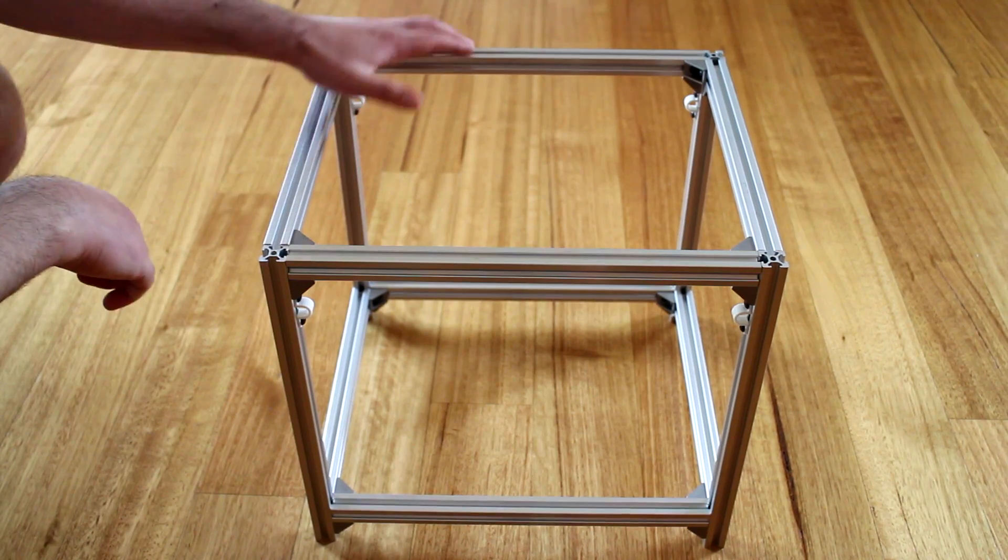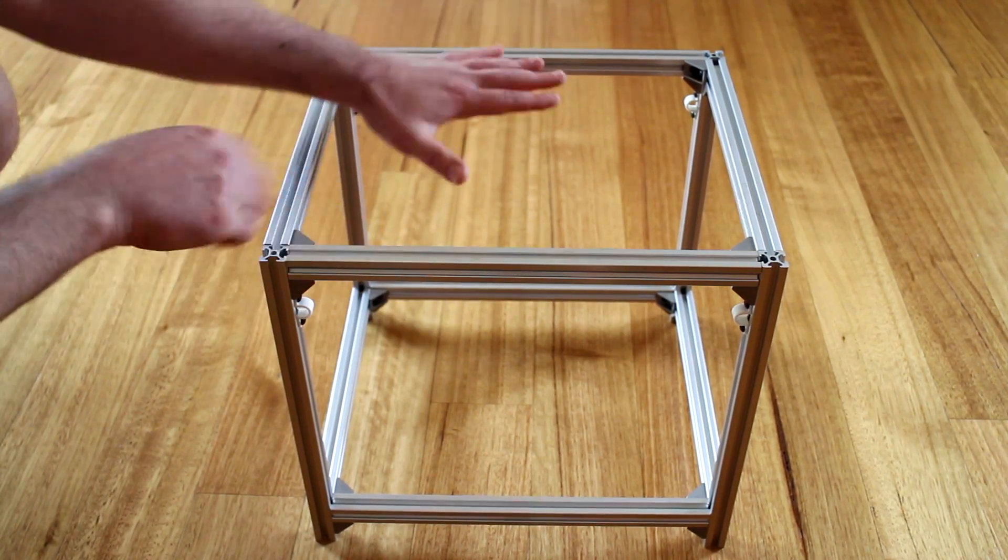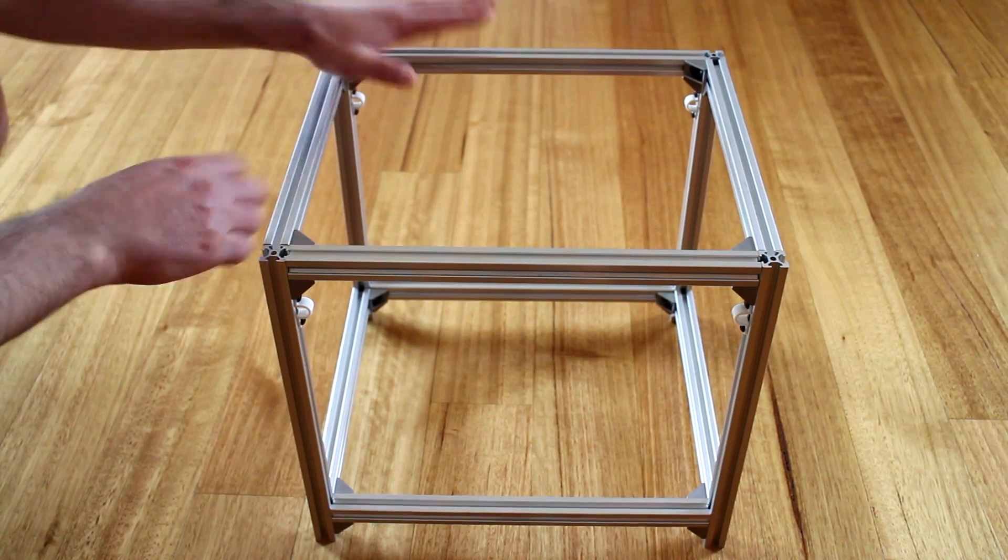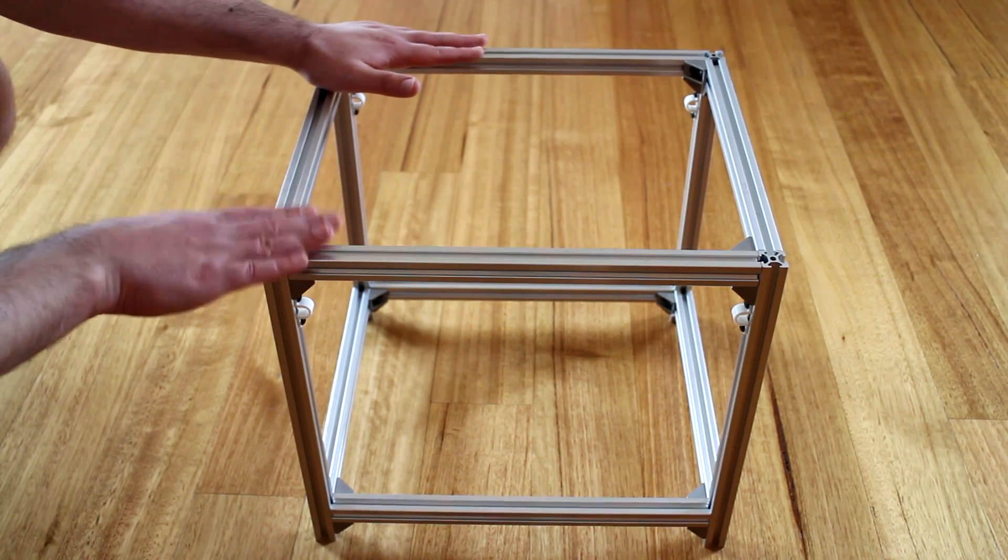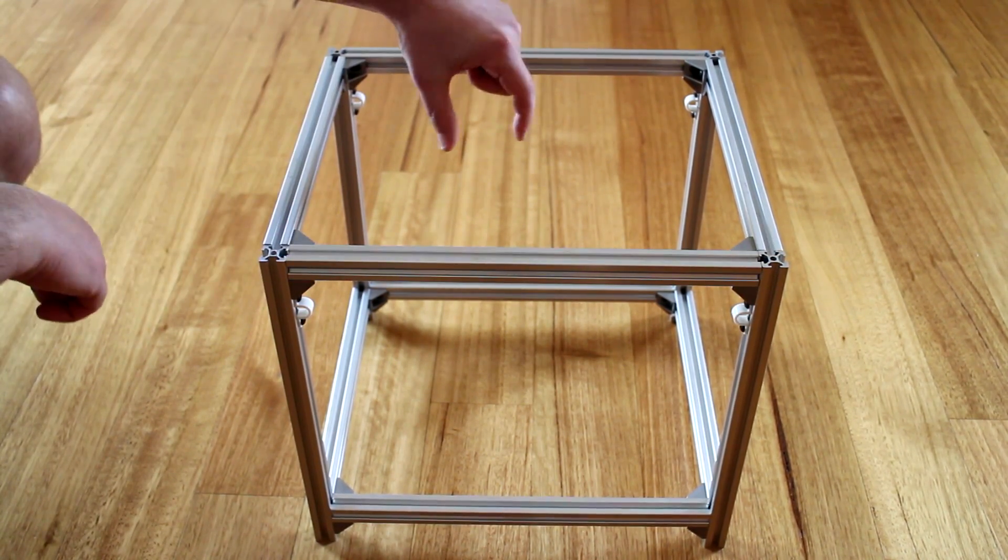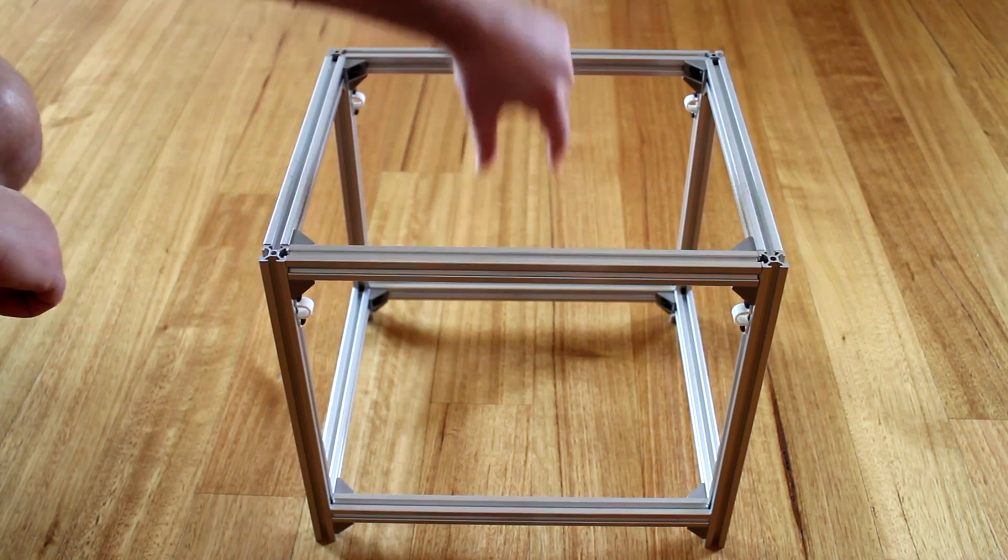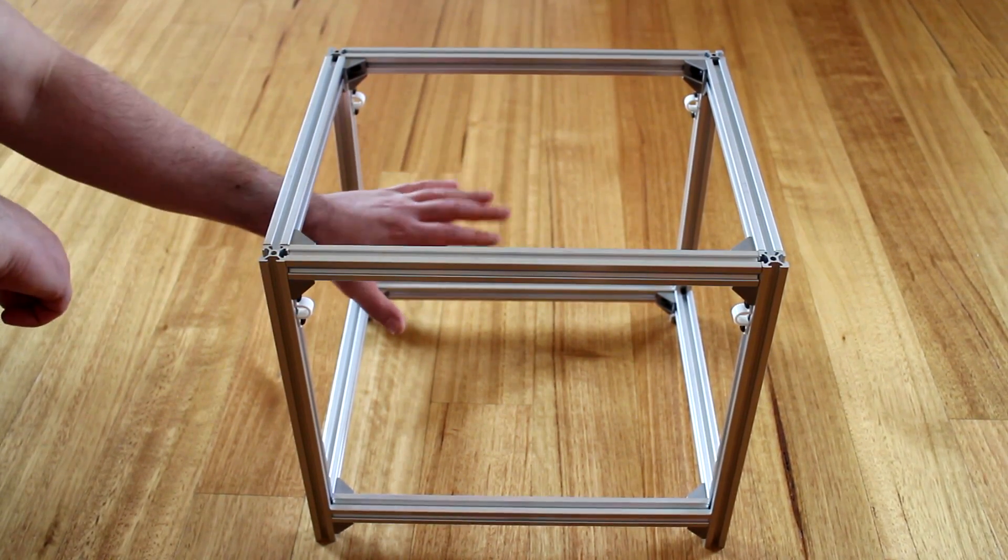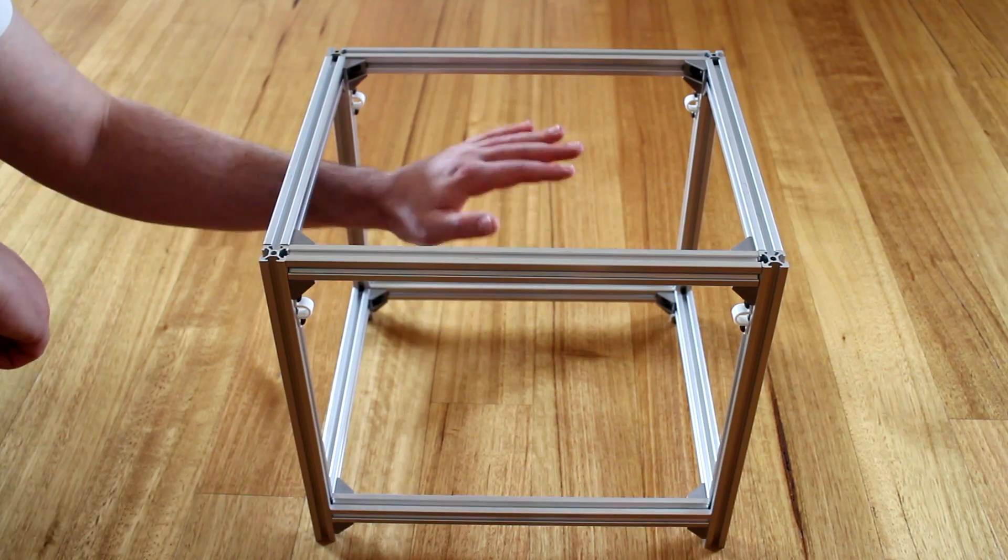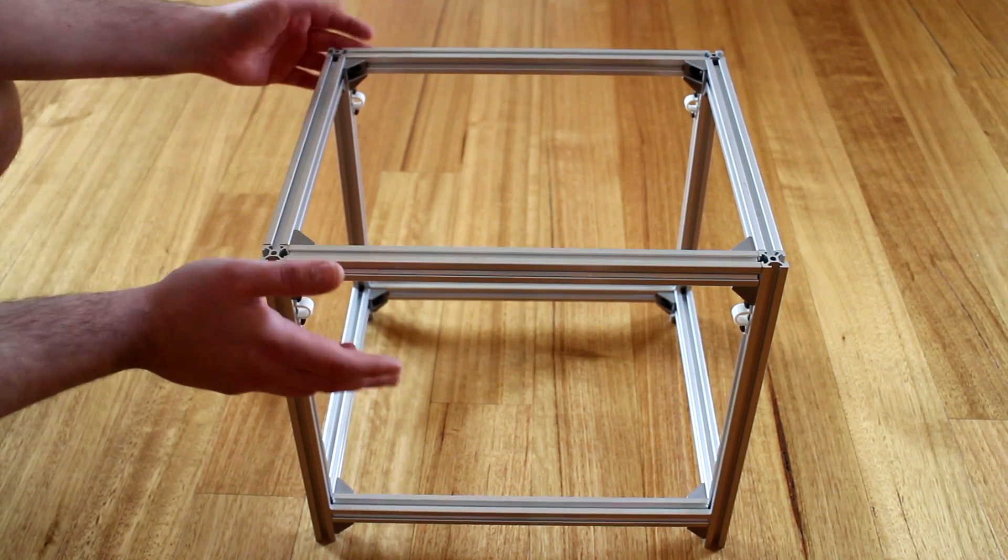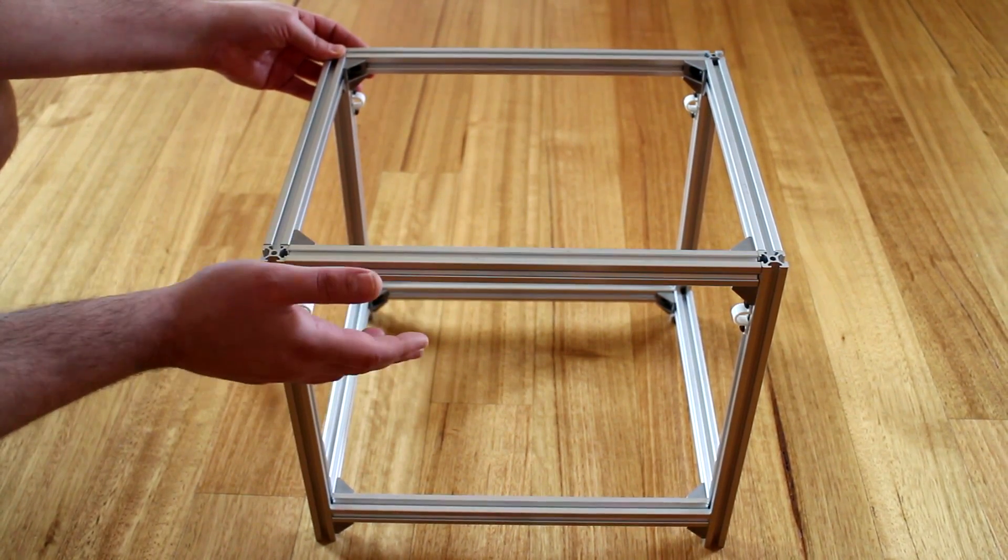I'll be moving away from a Prusa i3 style design where the y-axis or the bed moves up and down. This will be a Core XY printer, so the printhead actually moves in x and in the y-axis, and the bed platform itself drops in the z-axis, just like a lot of brand name printers out there like the Ultimaker.